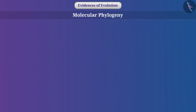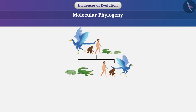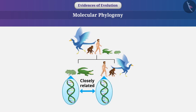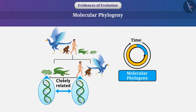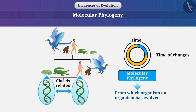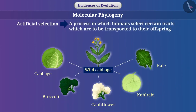Molecular phylogeny: The changes occurring in DNA during reproduction are a basic event in evolution. These changes progressively accumulate in the next generation. If the DNA of two organisms are closely related, it means that the two organisms have a close relationship. Molecular phylogeny deals with tracking how these changes took place in the past, and from this it can be identified from which organism an organism has evolved. Some species have evolved from artificial selection — a process in which humans select certain traits to be passed on to offspring. For example, artificial selection from wild cabbage produced variations such as cabbage, broccoli, cauliflower, kohlrabi, kale, etc.